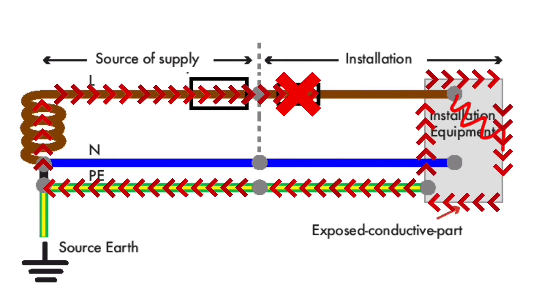This is the full earth fault loop path and needs to be a very low impedance in order to generate a very high fault current to cause rapid operation of the overcurrent protection device.